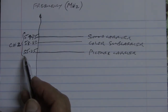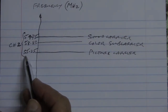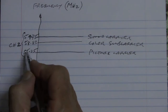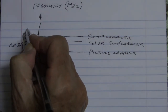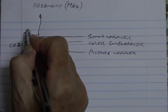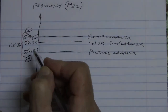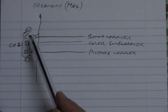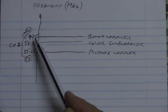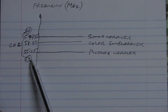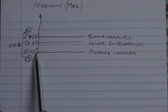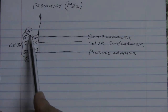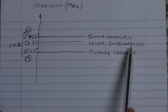We can say the start frequency is 1.25 MHz below the picture carrier. So if we take away 1.25, the start frequency would be 54 MHz, and the end frequency would be 60 MHz. So channel 2 is a composite signal that lies between 54 MHz and 60 MHz — 6 MHz wide — with the picture carrier and sound carrier sitting exactly at their specified frequencies within that band.